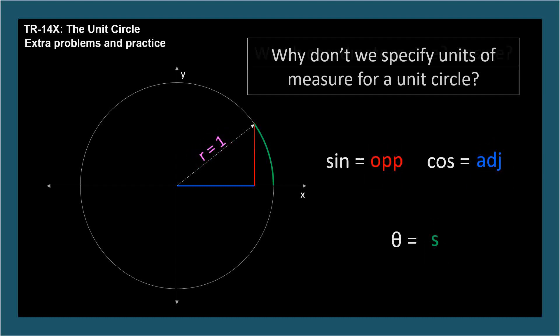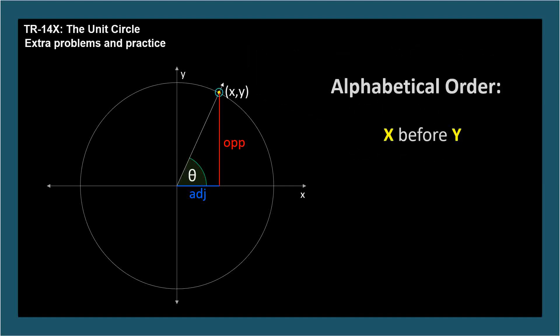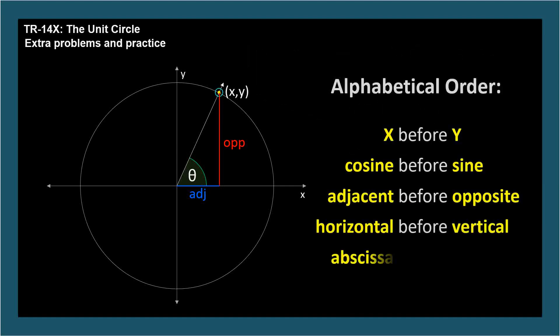Consider an angle's point on the unit circle. The point has x and y coordinates. Which is the sine and which is the cosine of the angle? The x coordinate is the cosine and the y coordinate is the sine. There are lots of alphabetical memory aids to help with this.